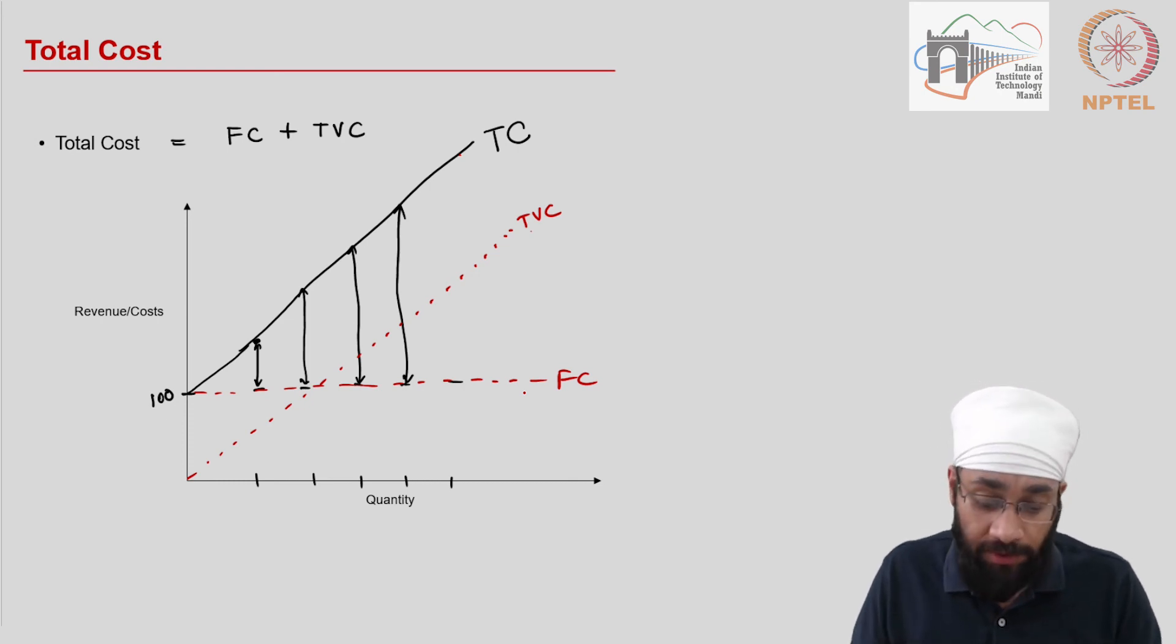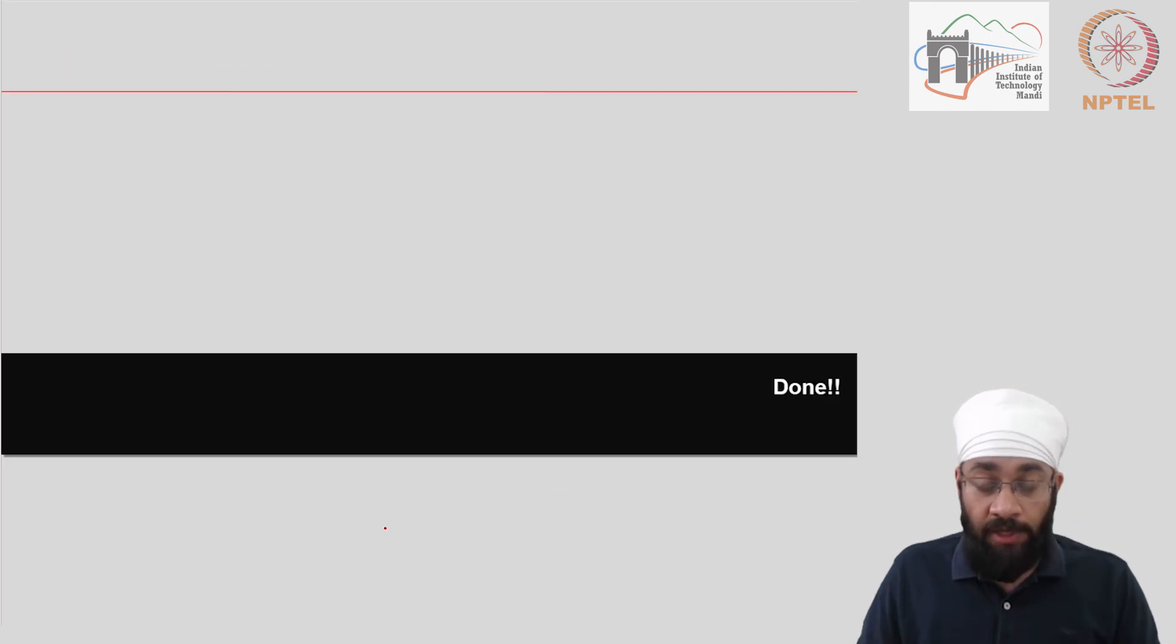So this is how these three types of costs behave and this is how they're going to change with the quantity, the volume, which is the main thing. All right, so now we know about the cost. Let's go to the next video and learn more.